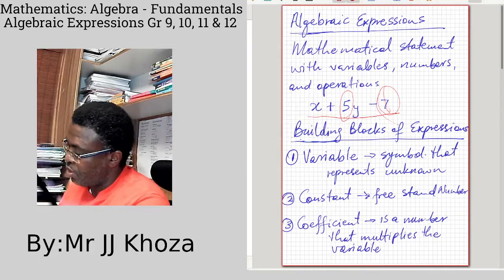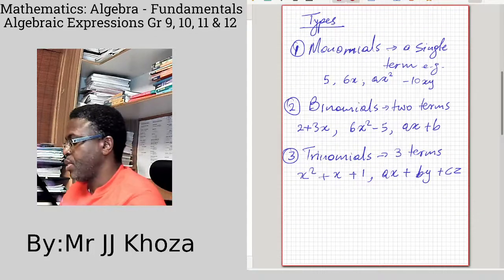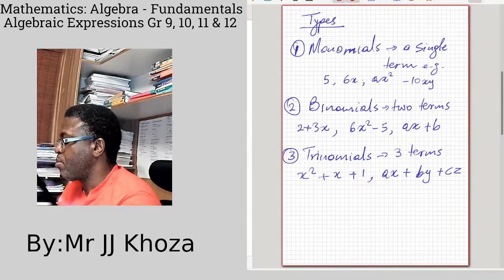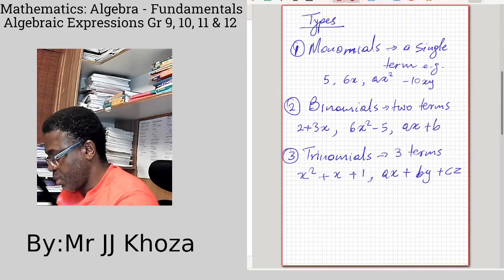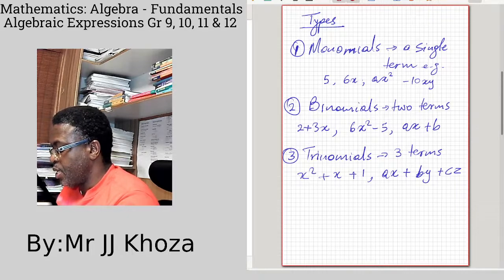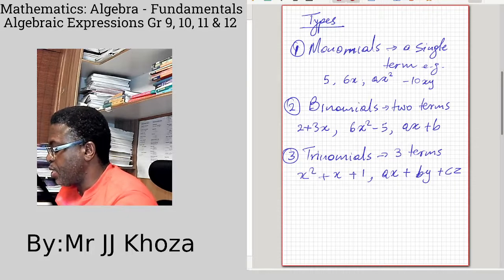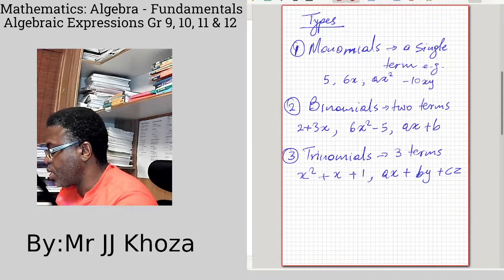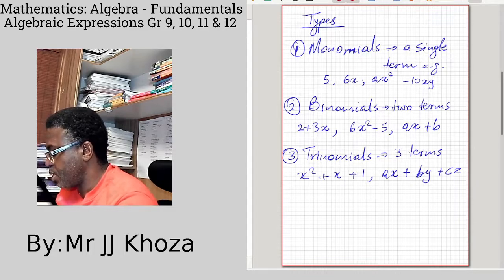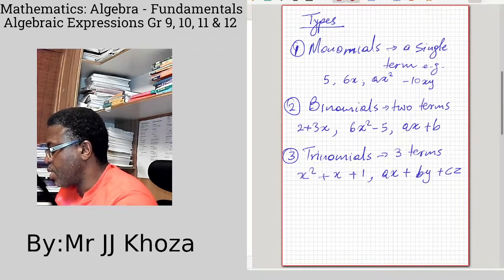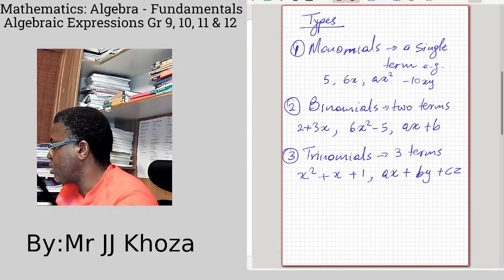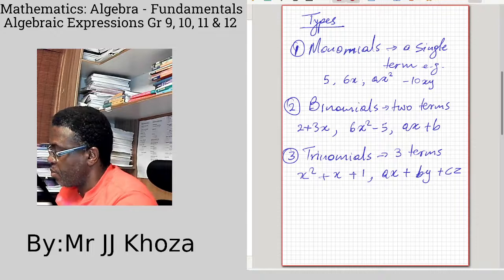Types of expressions: one is a monomial, that means a single term. In a single term we are talking about 6x, 5x, x squared. That is a single term because it has multiplied itself. Like 6x, it's a product, it's a single thing, it's a single entity.